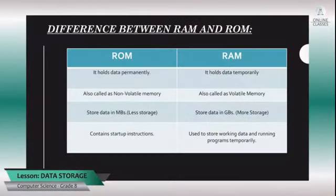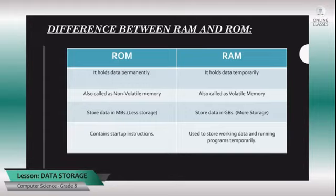Now the difference between ROM and RAM: ROM holds data permanently whereas RAM holds data temporarily. ROM is also called non-volatile and RAM is called volatile. ROM is an electronic chip that can hold data in the form of MBs, whereas RAM can hold data up to GBs. ROM contains startup instructions whereas RAM contains working data and running programs temporarily.